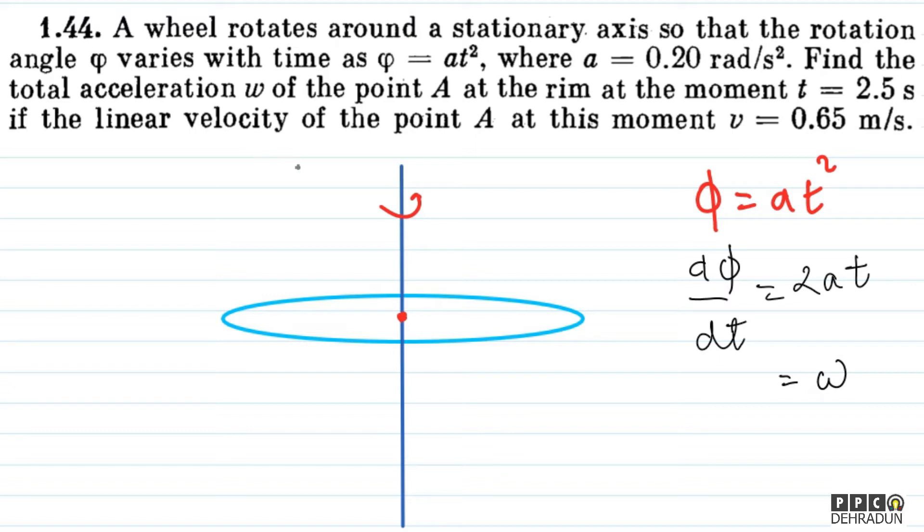Now we need to find the total acceleration w of point A at the rim. Let's take a point A on the rim, and quite obviously its velocity direction will be tangential. We need to find that particle's total acceleration, and we're given the linear velocity v equals 0.65 meters per second.